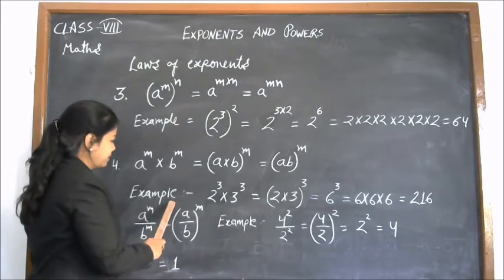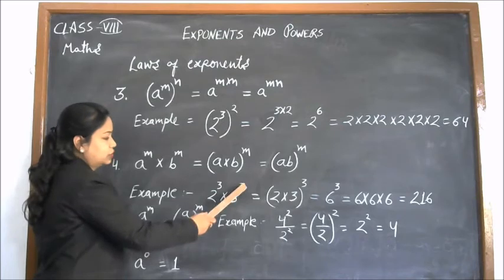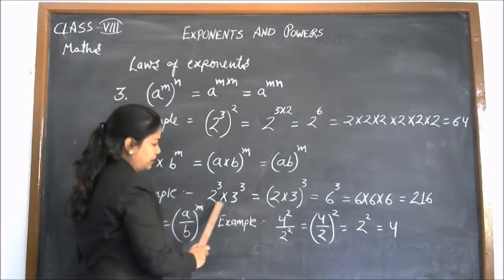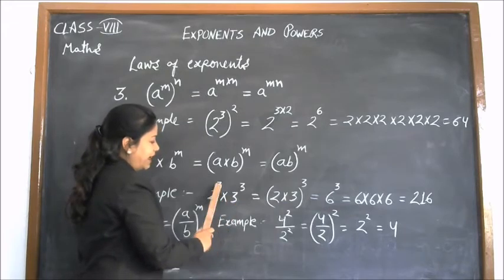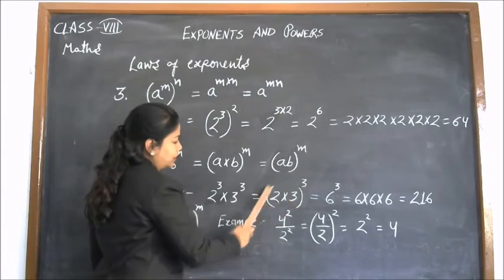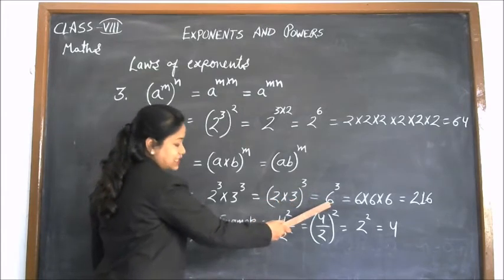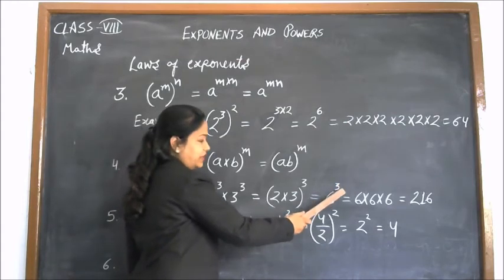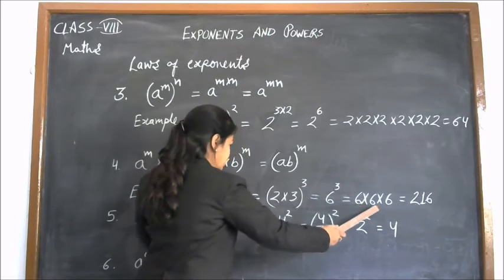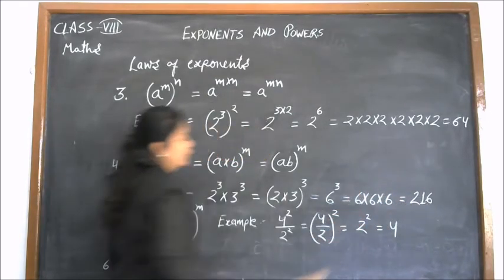Let us take an example: 2 to the power 3 into 3 to the power 3. We can write it as 2 into 3, multiplying these two numbers, and writing the power only one time: 2 into 3 whole to the power 3. 2 into 3 is 6, so we have 6 to the power 3. 6 to the power 3 means 6 into 6 into 6, which equals 216.